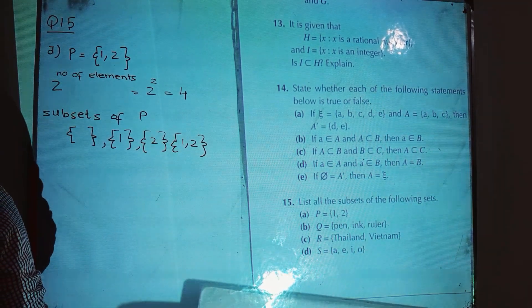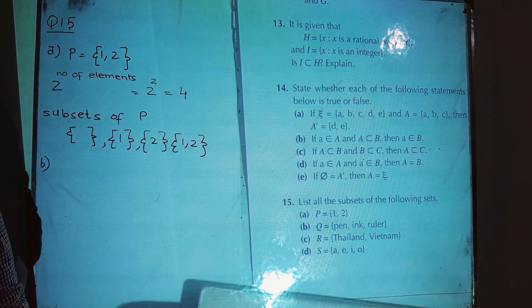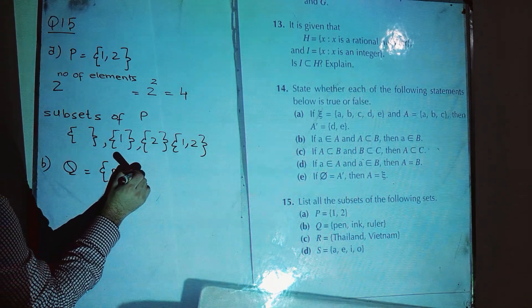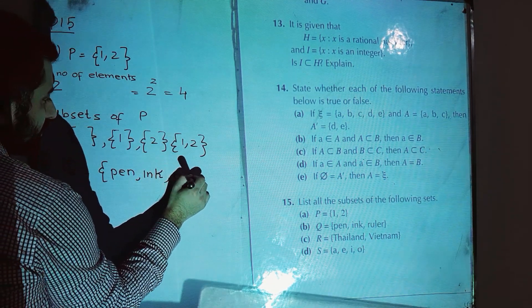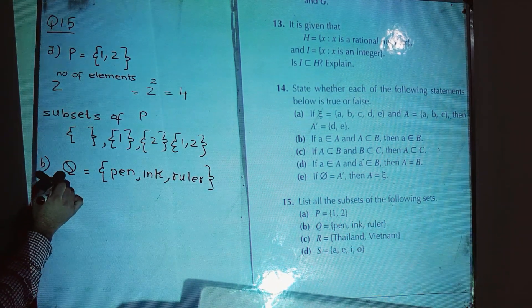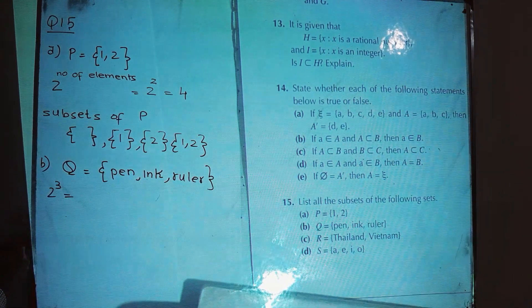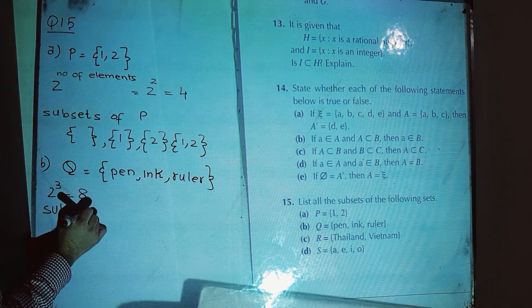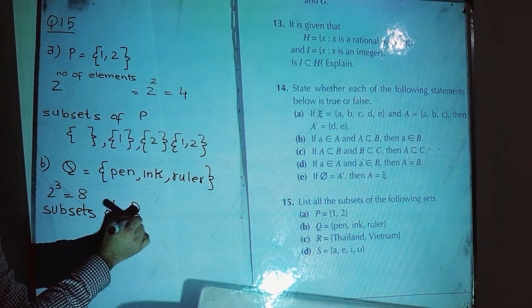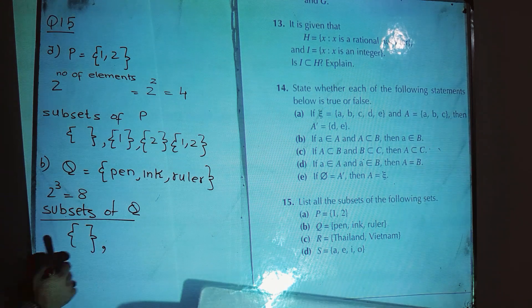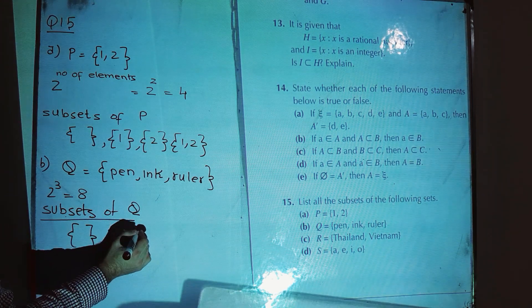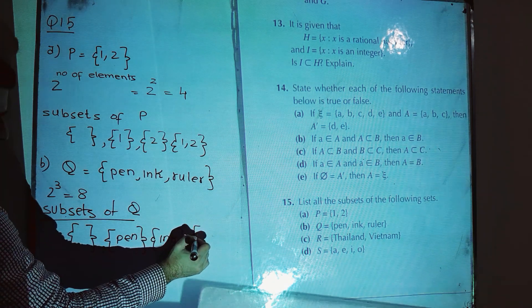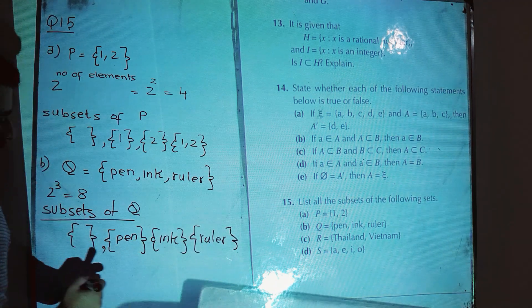In part B, we have set Q with elements {pen, ink, ruler}. How many subsets can we make? Two raised to the power three, because we have three elements, gives eight subsets. Subsets of Q: number one is the empty set — the empty set is a subset of all sets. Then subsets with one element: {pen}, then {ink}, then {ruler}.